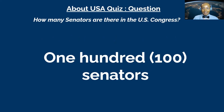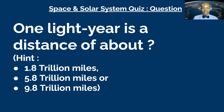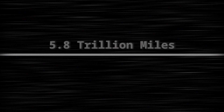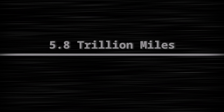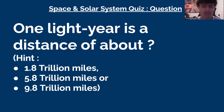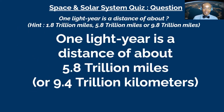Now it's getting a little harder. David's next question: is one light year a distance of about 1.8 trillion miles, 5.8 trillion miles, or 9.8 trillion miles? David guessed 1.8 trillion; Isaiah guessed 5.8 trillion. Isaiah got it — one light year is about 5.8 trillion miles, or 9.4 trillion kilometers. Isaiah now has three dollars, David has two.